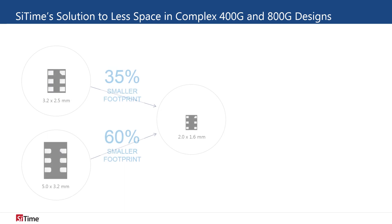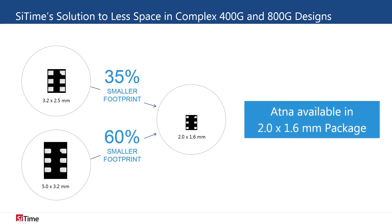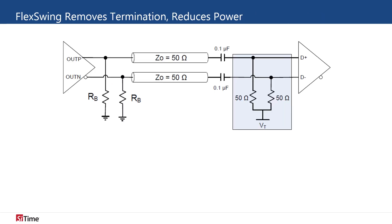SciTime's Atena differential oscillator is the optimal solution for 400 Gb and 800 Gb designs that are highly space-constrained. The 2x1.6 mm package is 35% smaller than a 3.2x2.5 mm package and 60% smaller than a 5x3.2 mm package. As the market moves from 100 Gb to 400 Gb and then to 800 Gb modules, reducing the amount of power consumed by the optical module is essential.